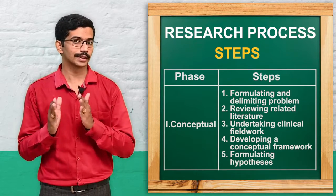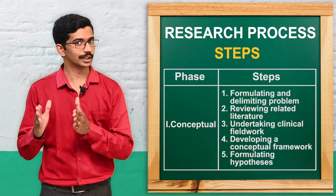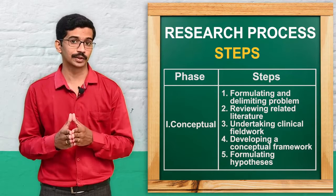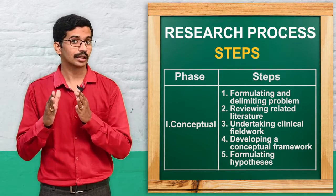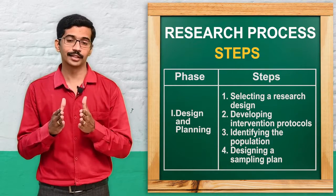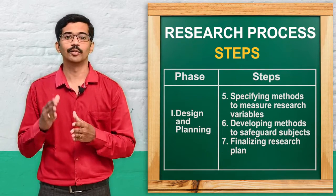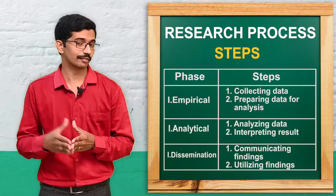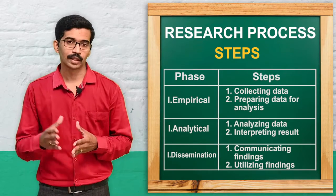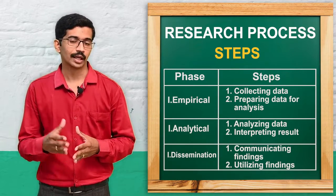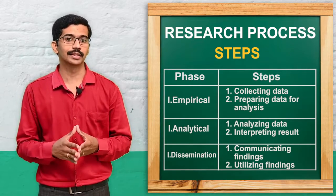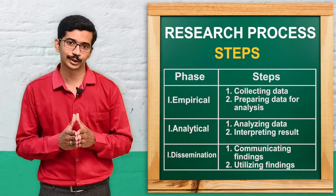The research process contains some important steps, and each has sub-steps. The main steps are: first, the conceptual phase; second, the design phase; third, the empirical phase, which mainly involves collecting data; fourth, the analytical phase; and finally, the dissemination phase. These are the five important steps of the research process.